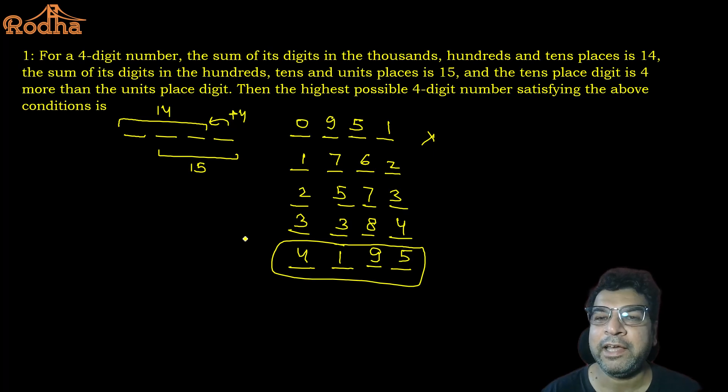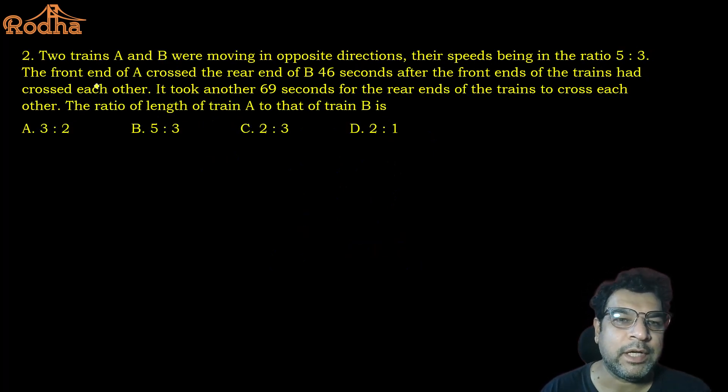Moving on to the second question. Two trains A and B are moving in opposite directions with speeds of 5 and 3. The front end of A crossed the rear end of B 46 seconds after the front end of both trains had crossed each other. The scenario is this and this. The front end of A crosses the rear end of B 46 seconds after the front end of both trains. Suppose this is A and this is B. As soon as the front ends cross, the counting starts, and after 46 seconds the front end of A will cross the rear end of B.